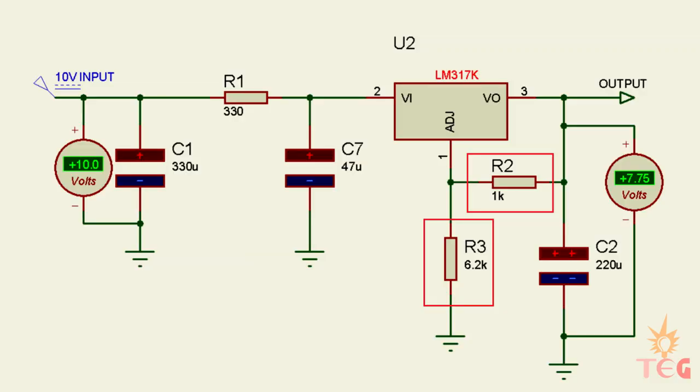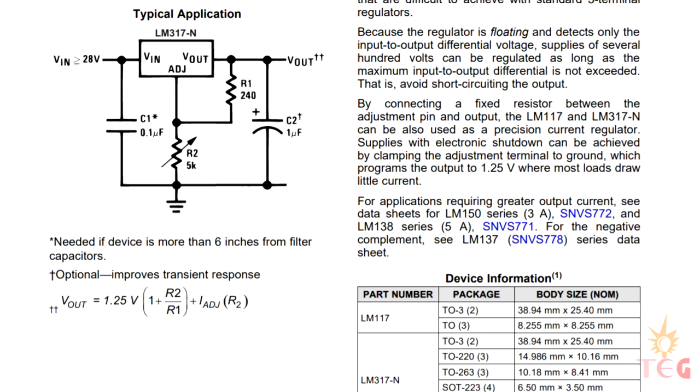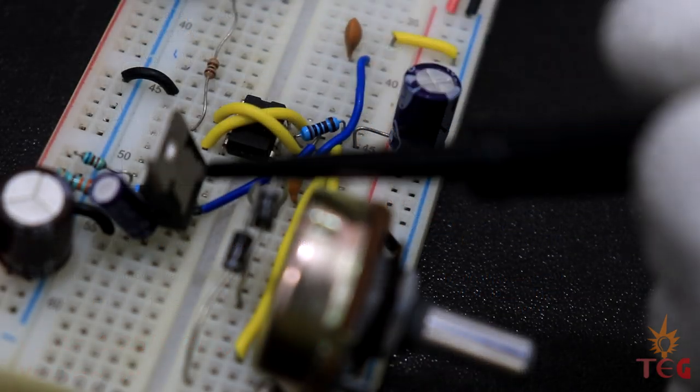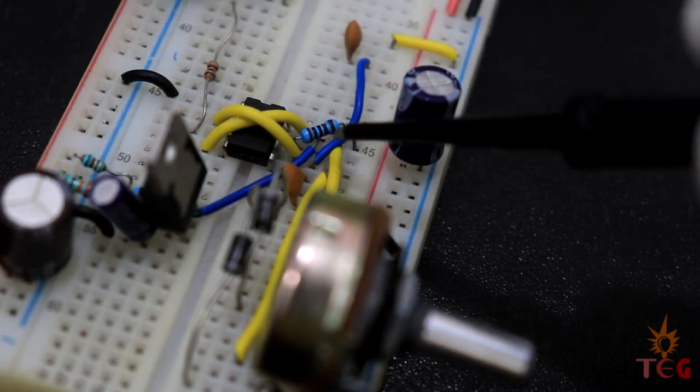Here R1 is 6.2 kilo-ohms and R2 is 1 kilo-ohm. Since I adjust is in the range of microamperes, we can ignore it here. This gives us an output voltage of 9 volts. This 9 volts is then used to power the 555 timer.